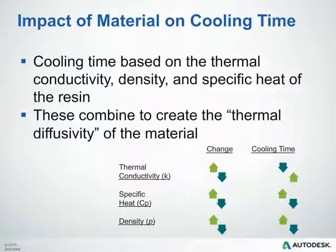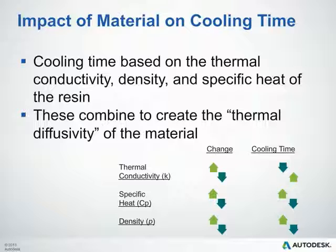Why do we care about these thermal properties for our polymer? The impact of these properties can have a direct effect on your cooling time. Cooling time is based on the thermal conductivity, density, and specific heat of the resin — these combine to create the thermal diffusivity of the material. As thermal conductivity increases, our cooling time decreases; as it decreases, cooling time can increase. As specific heat increases, cooling time increases; as it decreases, cooling time can decrease. Density has a similar effect to specific heat. So this does impact cooling times and naturally impacts cycle time.